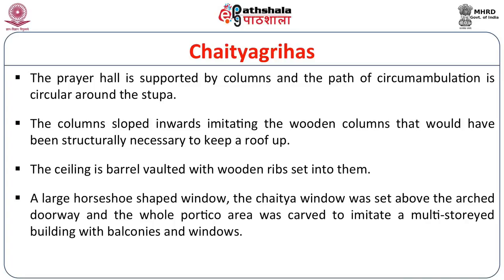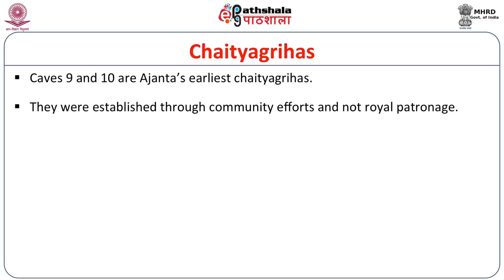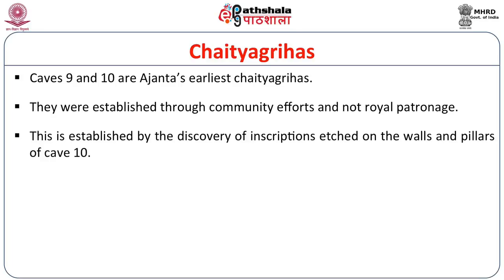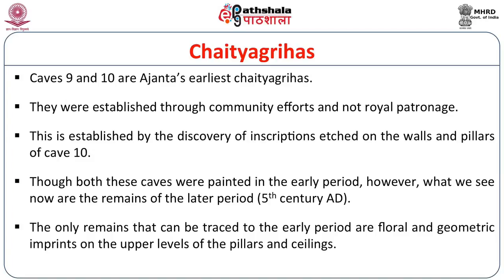The prayer hall is supported by columns and the path of circumambulation is circular around the stupa. The columns slope inwards, imitating the wooden columns that would have been structurally necessary to keep a roof up. The ceiling is barrel-vaulted with wooden ribs set into it. The large horseshoe-shaped Chaiti window was set above the arched doorway, and the whole area was carved to imitate a multi-storied building with balconies and windows. Caves 9 and 10 are Ajanta's earliest Chaitigrihas, established through community efforts rather than royal patronage, as established by inscriptions on the walls and pillars of Cave 10.